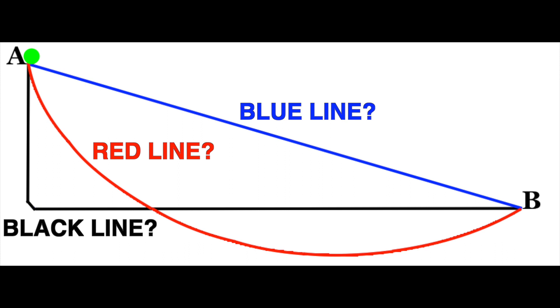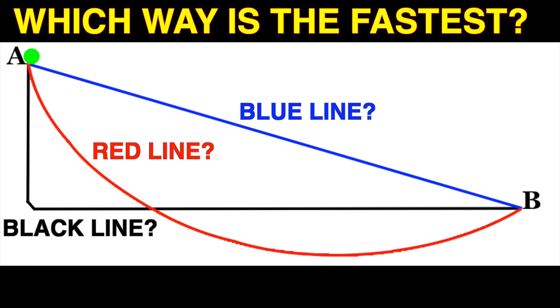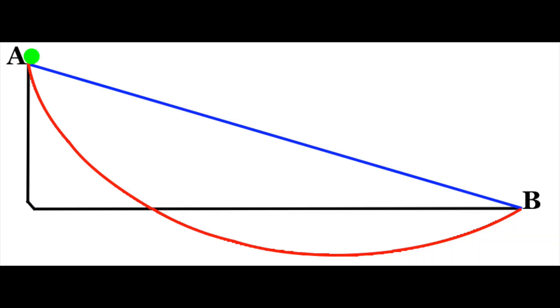So these are the three options we have, and you have to find which path is the fastest. Now, I'm not asking you the shortest path,